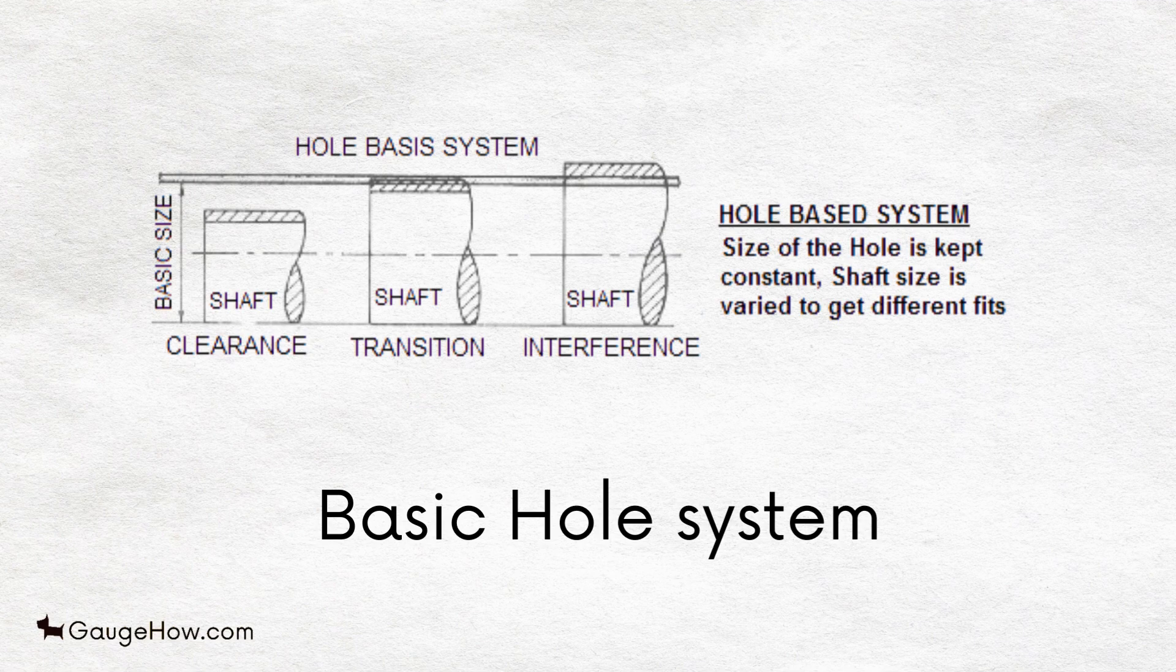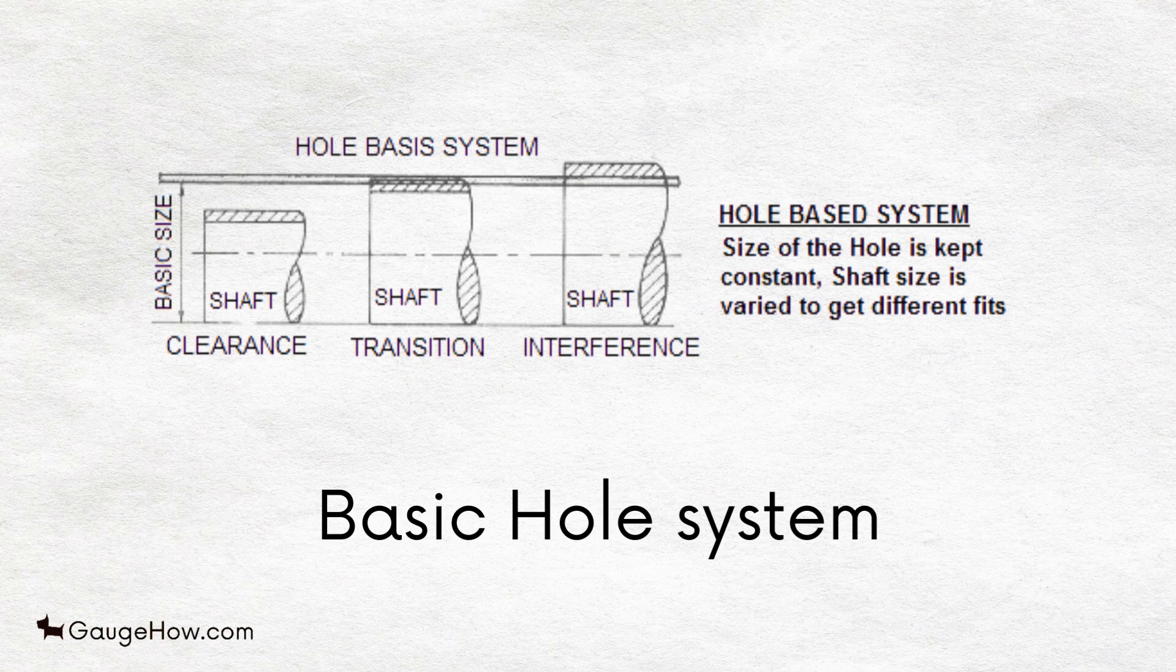Basic Hole System: In this system, the design size of the hole is the basic size from which allowance is subtracted to obtain the diameter of the shaft.